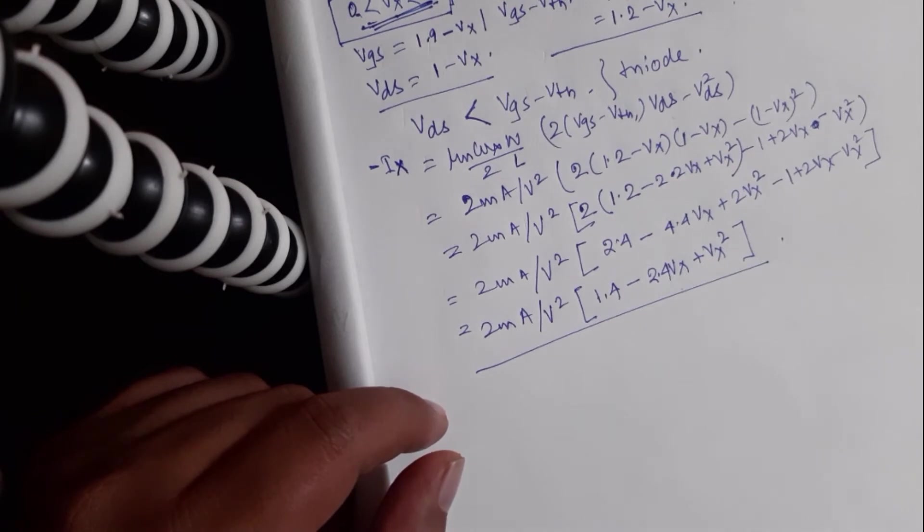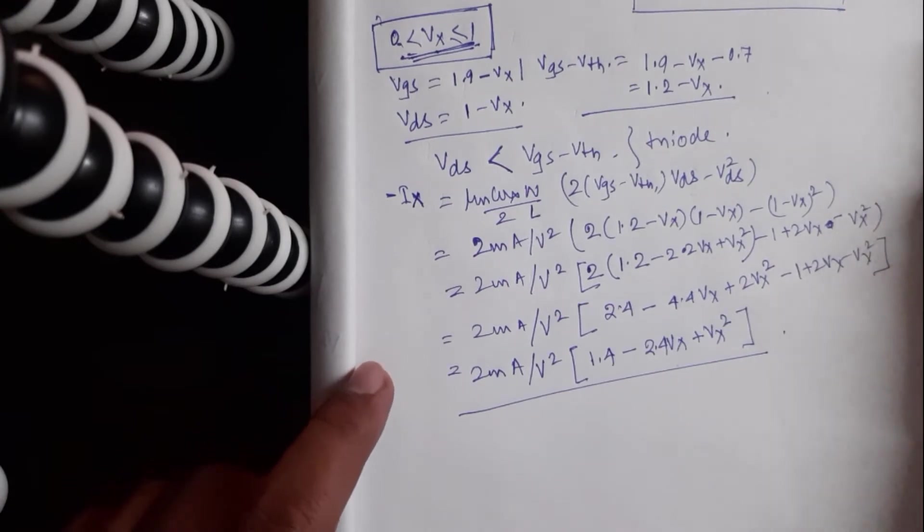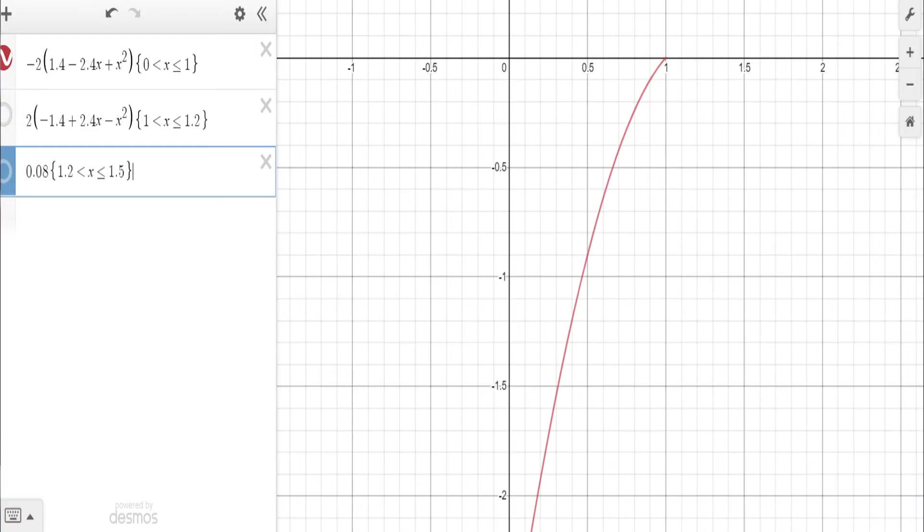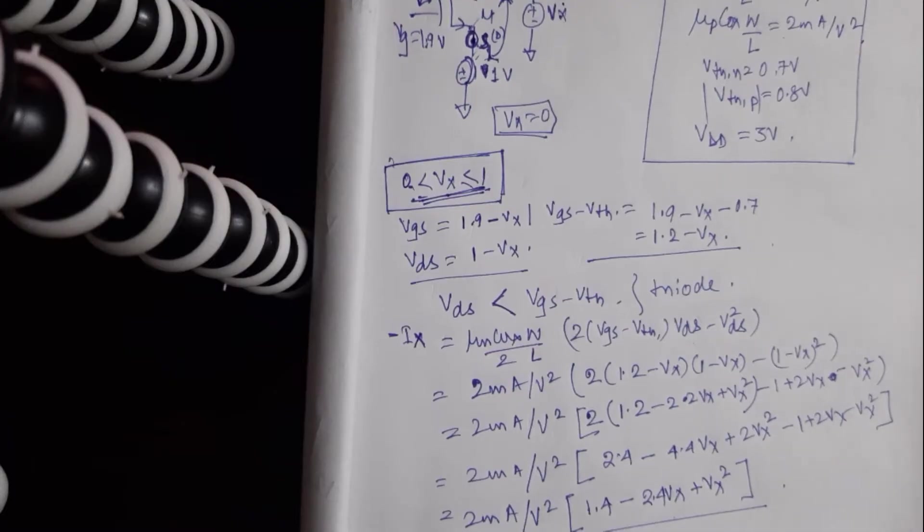So this is the trend of the drain current with respect to Vx. We can easily plot this in a graphing calculator. So this is how the graph looks. This is just to put it into perspective, as the values were in micro and it was too hard to look at. So for all the other parts, I will just multiply 1000 to the values, so that it's a little more presentable.